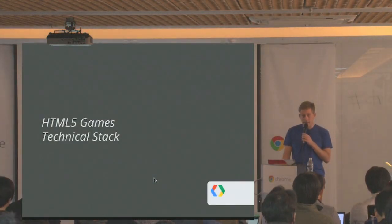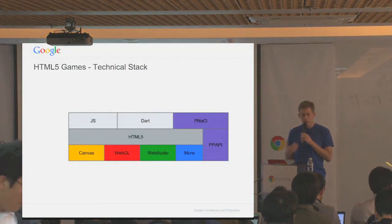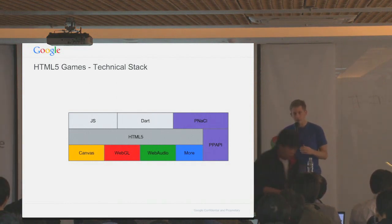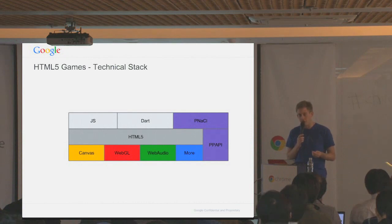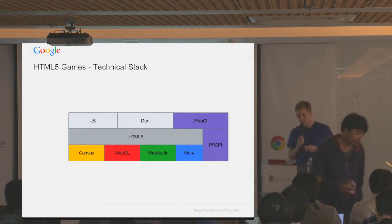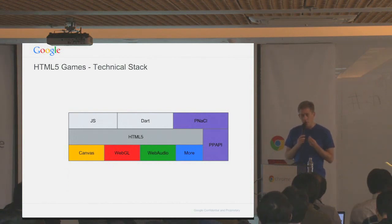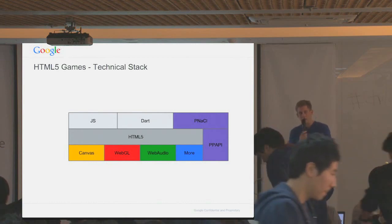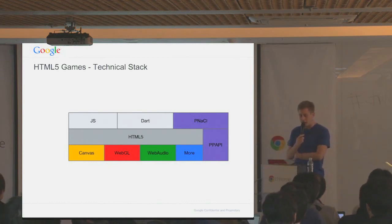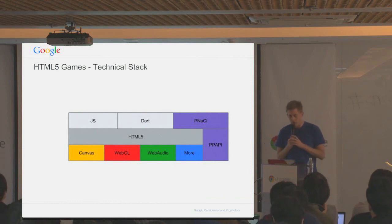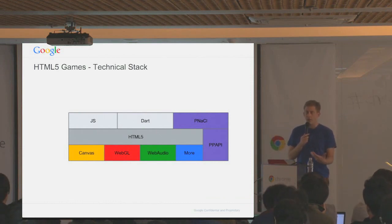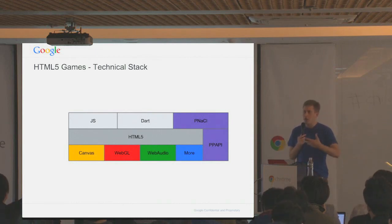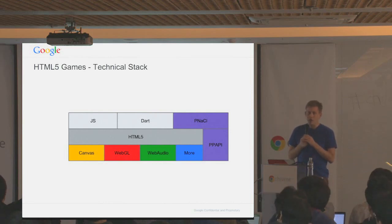I want to talk about the tech stack. This talk is bootstrapping anyone who doesn't know anything about HTML5 game development. At a really high level, along the top we have different languages you can access the HTML5 APIs through: JavaScript, Dart, and Pinnacle on the right, which I'll talk about later. HTML5, from a game developer's perspective, consists mostly of Canvas, WebGL, Web Audio, and some miscellaneous APIs, which I'll cover momentarily.